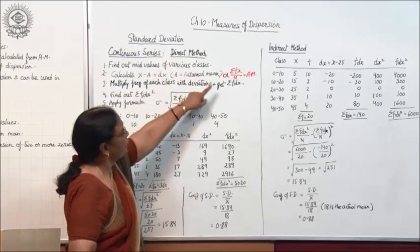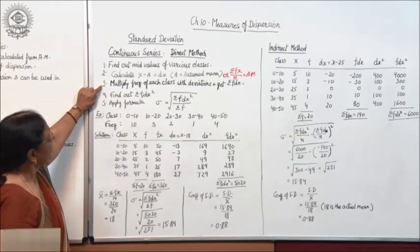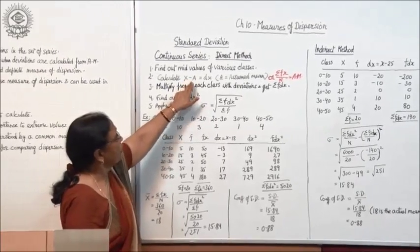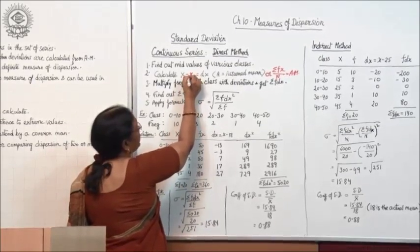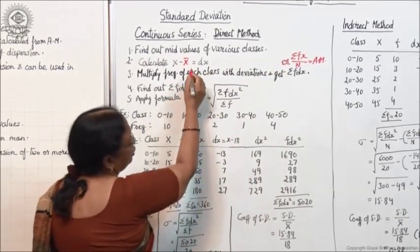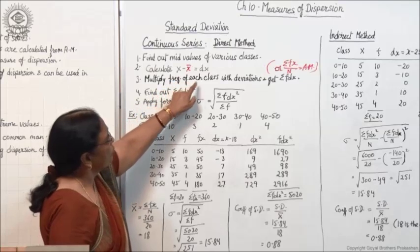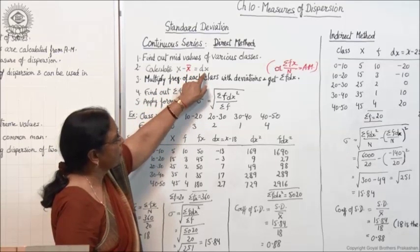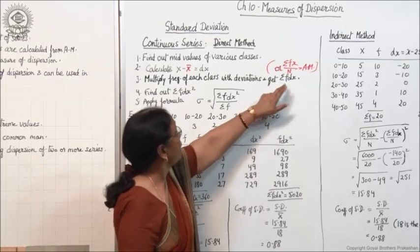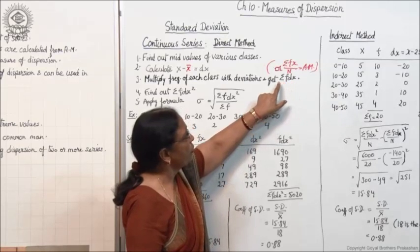When you are taking the direct method, you will take out the actual arithmetic mean. When you are taking the indirect method, then you take the assumed mean. The third step is to multiply the frequency of each class with deviations to get Σfdx. When you take out the deviation x minus x̄, this is the direct method and assumed mean will not be considered. So x minus x̄ equals dx. Multiply these deviations with frequency and do the total to get Σfdx.